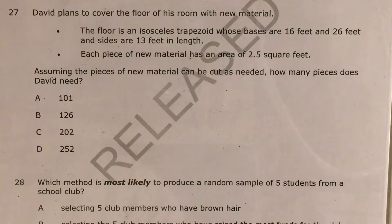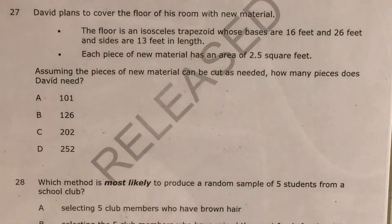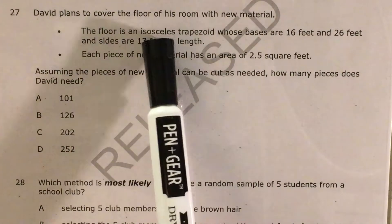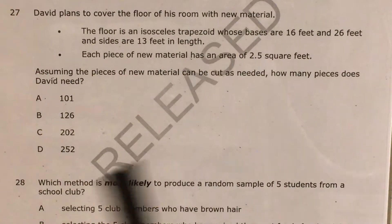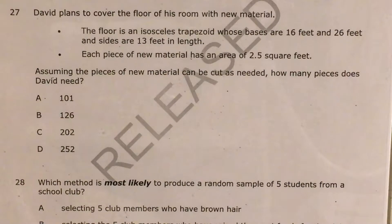Today we're going to tackle question 27 in the Math 3 questions that North Carolina released this past school year. The question tells us that David plans to cover the floor of his room with new material. The floor is an isosceles trapezoid. The fact that it's an isosceles trapezoid is very important, whose bases are 16 feet and 26 feet, and sides are 13 feet in length.